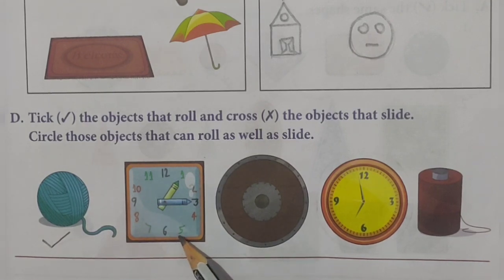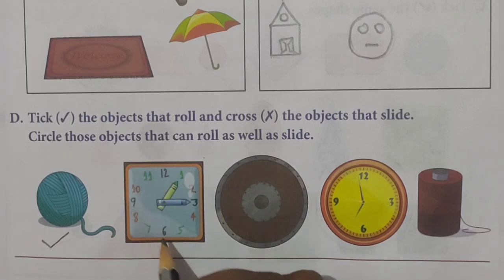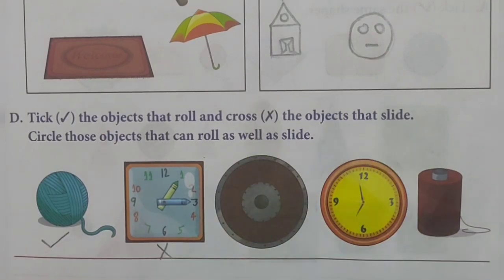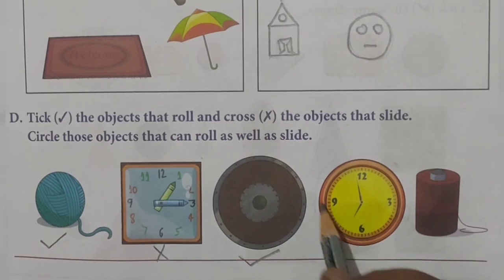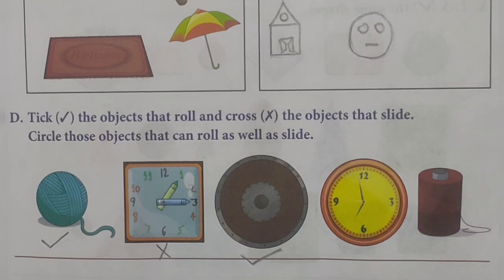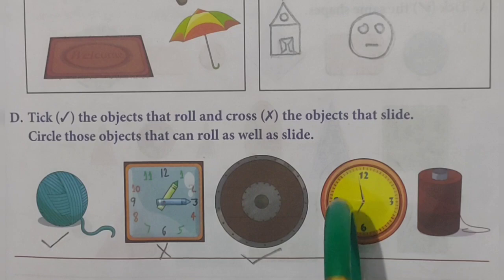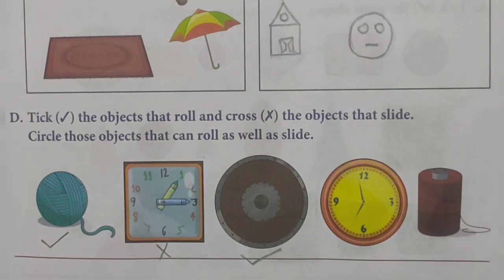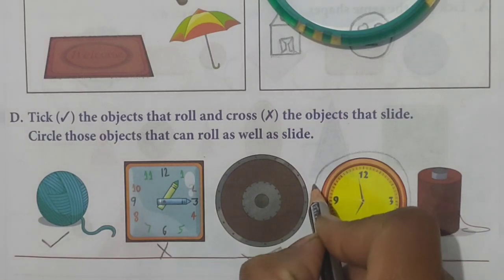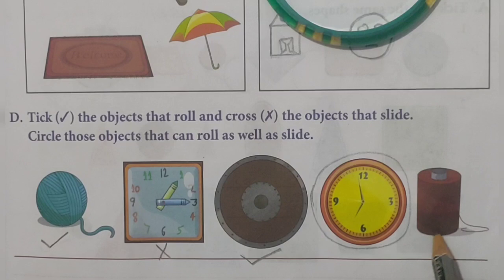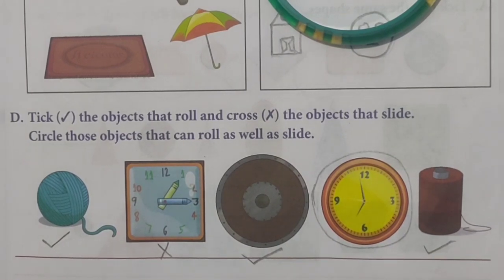Next, a square-shaped watch is given — since it has a square shape it will not roll, it will only slide, so we cross it. Now a disc is given — it is circular so it can roll. Then a circular watch is given: when placed vertically it will roll, and when placed flat horizontally it will slide. Therefore we circle the circular watch as it can both roll and slide. The reel of thread can only roll however it is thrown, so we tick it.